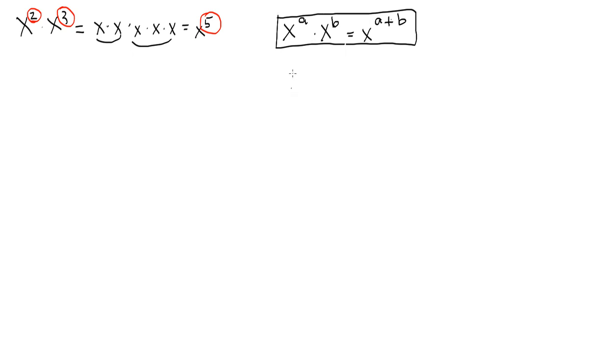So what we're saying is if you have two exponential expressions that have the same base, this x is the base, and you multiply them together, you add the exponent. It's a pretty simple property actually.